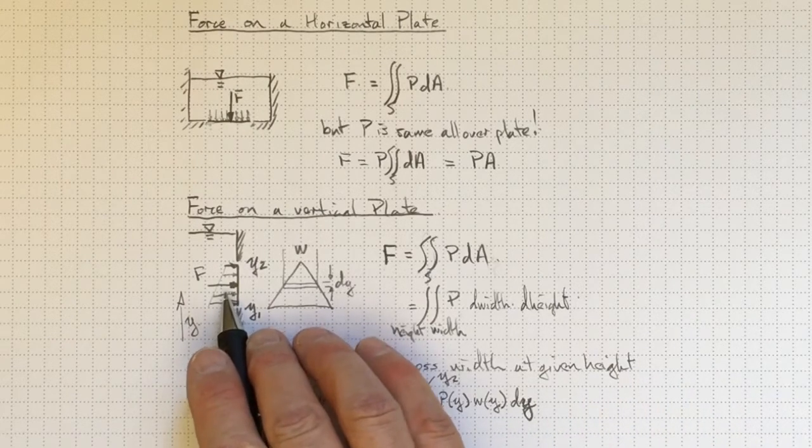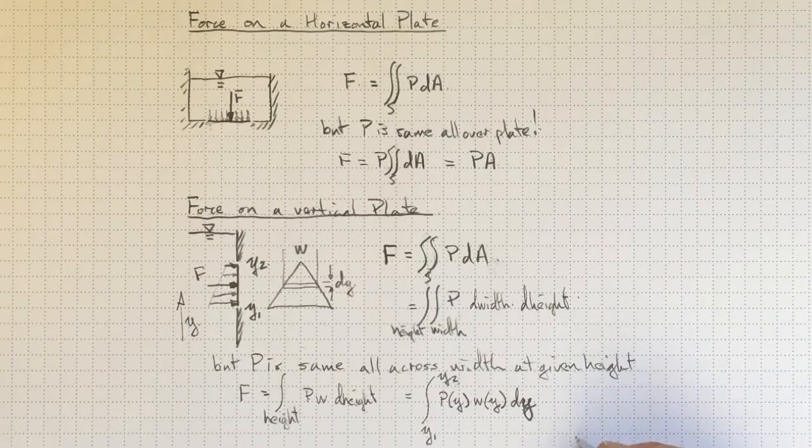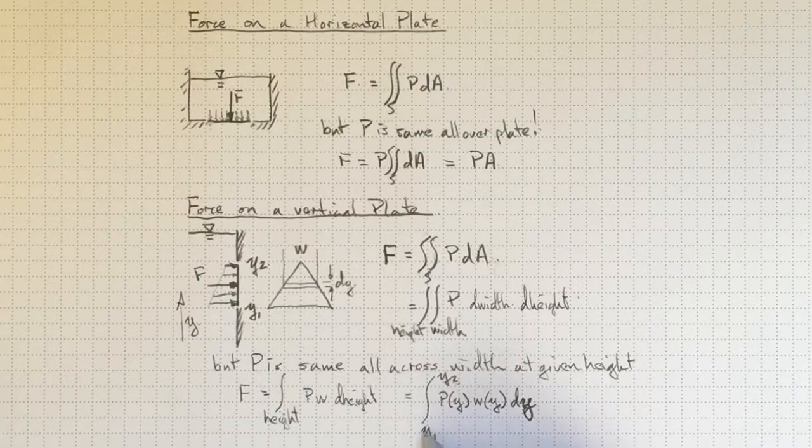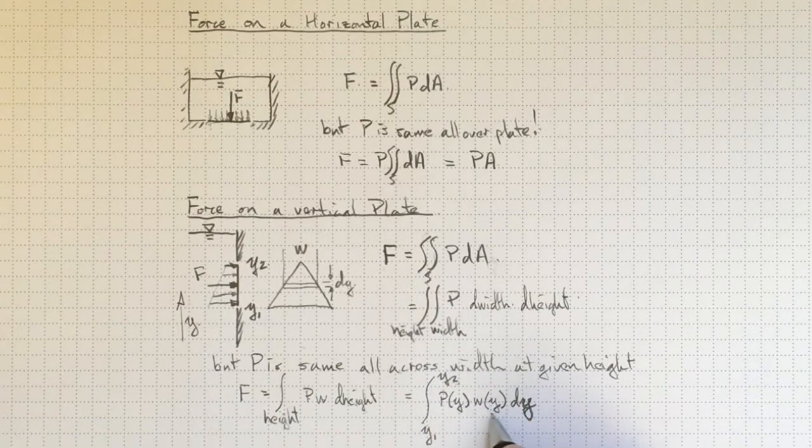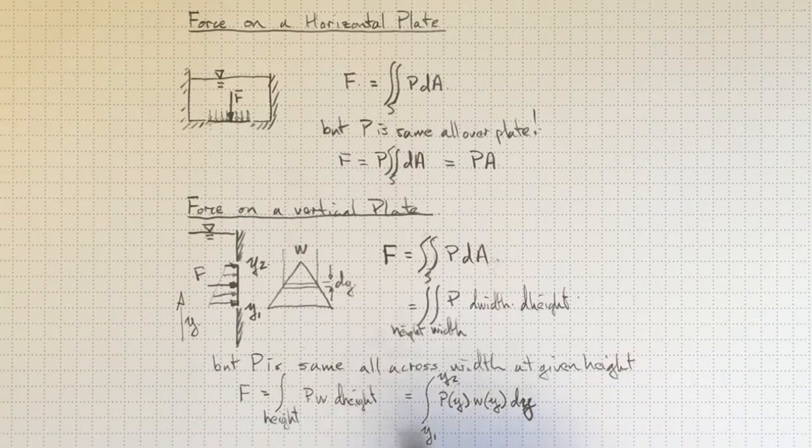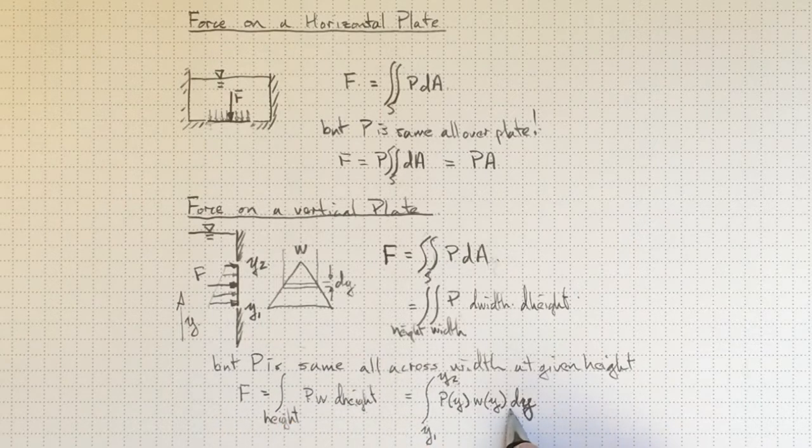Again, in our simplification, we've gotten away from that normal vector. So we're going to have to check to make sure that we've chosen all of our signs correctly to get this force acting in the right direction.